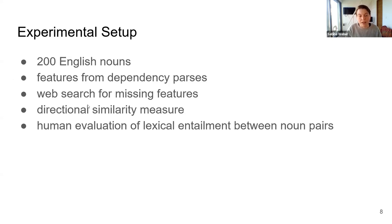They then computed a directional similarity measure between the two vectors. So basically what we've seen in the Venn diagram as the overlap between the circle for animal and the circle for cat, they did that with the vectors computing a measure of overlap that the vectors had. And lastly, they had humans evaluate the lexical entailment between the noun pairs.